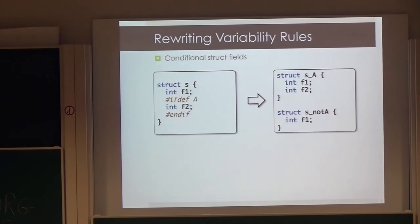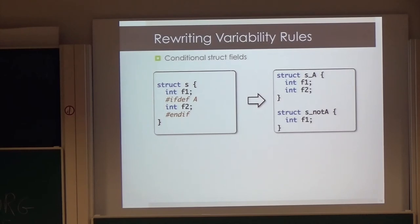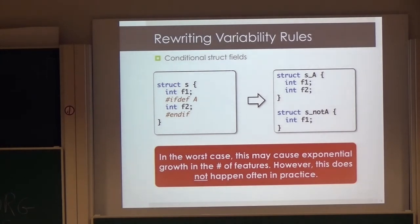I want to point out one specific rule: conditional struct fields. If you have a structure with two fields and field F2 depends on feature A, what we do currently is duplicate the structure — S_A and S_notA — and put the fields accordingly. In the worst case, this could blow up with the number of features. However, we did an evaluation — which I'll show shortly — and this does not happen in practice, though we need to test more. We are working on a smarter rewriting to handle this.